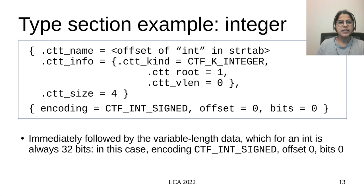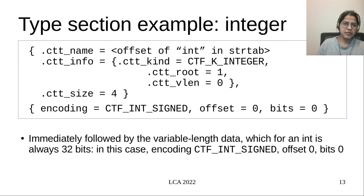Let's look at an integer type example. ctf_name points to the string 'int' in the CTF string table. ctf_info tells you the kind is CTF_K_INTEGER, and ctf_vlen is set to zero. The ctf_stype_t struct is immediately followed by variable-length data which for int is a 32-bit data encoding whether the integer is signed or not and other details.